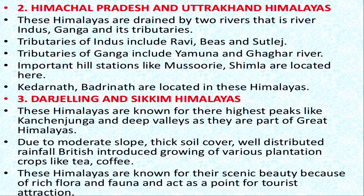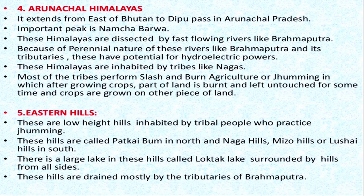The second division is Himachal Pradesh and Uttarakhand Himalayas, where Indus and Ganga tributaries — Ravi, Beas, Sutlej, Yamuna, and Ghaggar — are found. Then we come to the Darjeeling and Sikkim Himalayas. Leaving Nepal Himalayas which are part of Nepal, we talk about Darjeeling and Sikkim Himalayas within India. Then the Arunachal Himalayas, located in Arunachal Pradesh, where Namcha Barwa, one of the highest peaks, is found, and rivers like Brahmaputra enter India.